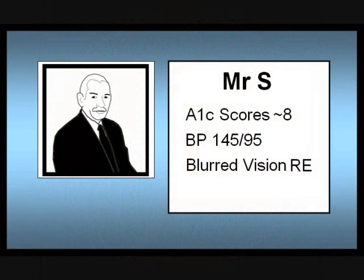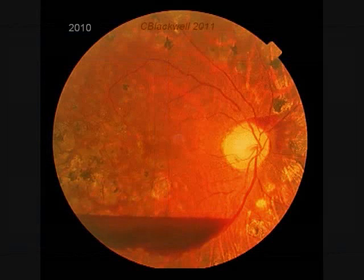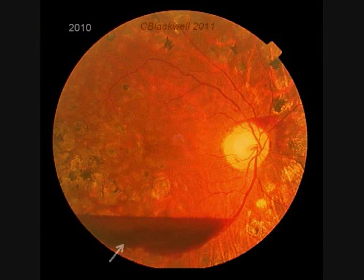Through 2009 and 2010, his A1C scores were running around 8, with elevated blood pressure at 145 over 95. One day, Mr. S. called in, noting vision in the right eye seemed a little fuzzy. Here is what was happening inside that eye: the dark red crescent is blood in front of the retina behind the vitreous. There is also a small hemorrhage on the top of the optic nerve. He had an angiogram showing new vessel growth, so more laser treatment was added. The new vessels regressed and the hemorrhage gradually cleared.